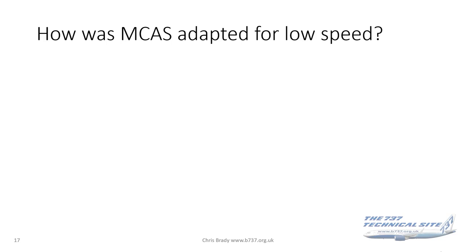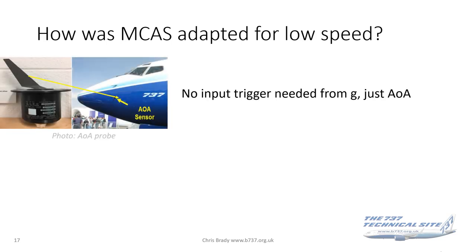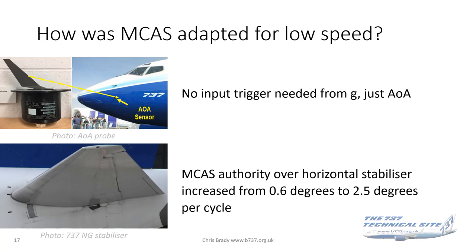How was MCAS adapted for low speed? First, no G input trigger was needed anymore — just angle of attack — because this wasn't the wind-up turn case; this was low-speed 1G stall entry. Secondly, the MCAS authority over the horizontal stabilizer was increased from 0.6 to 2.5 degrees per cycle. This was because the original scope of MCAS was for high speed, and there needed to be greater stab control at low speed than at high speed.